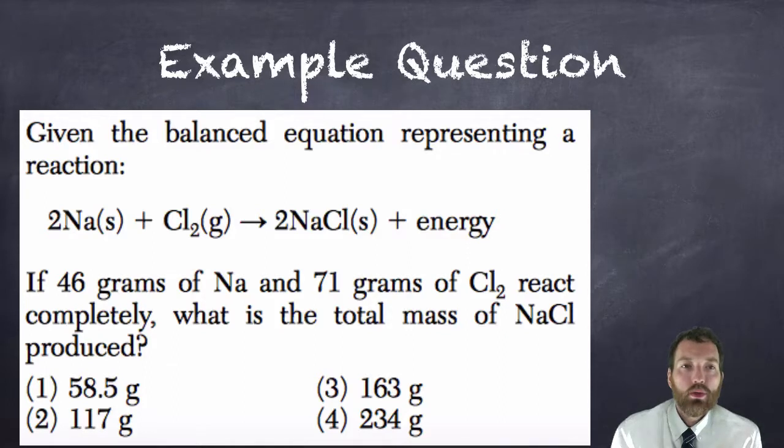Okay, so what I like to do on questions like this is I like to write on the equation the masses that are given. So it says 46 grams of sodium, so I'll go ahead and write that there, plus 71 grams of chlorine, so I'll write that underneath the chlorine. If I take 46 plus 71 and add that together, I get 117 grams. So according to the law of conservation of mass, the total mass of the sodium chloride produced would be also 117 grams, which is choice two.